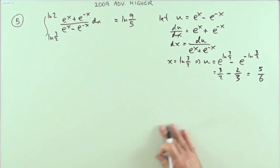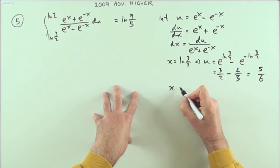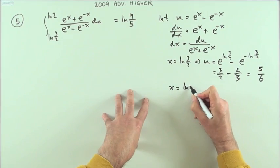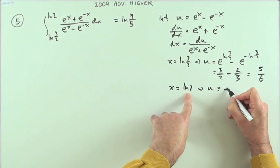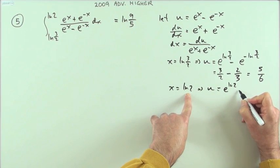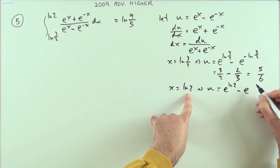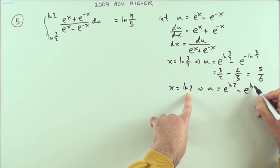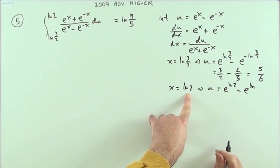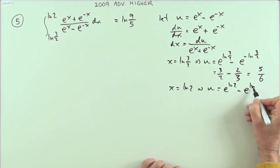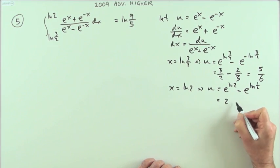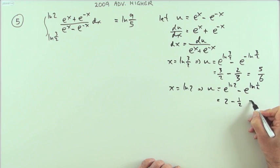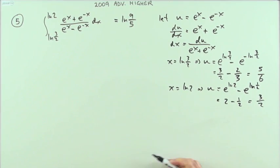Same in the next one. If x is ln(2), that means u is going to be, I'll have e^(ln(2)) - e^(-ln(2)). But I think straight away this time, because I'm wiser after the event now, instead of writing -ln(2), I'm just going to write ln(2^(-1)) which is ln(1/2). Then I can say I've got 2 - 1/2, so that one's going to be 3/2.